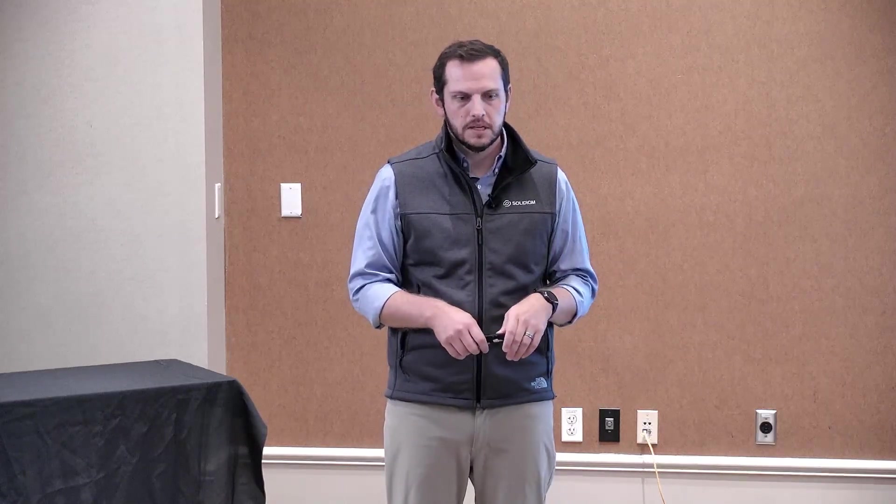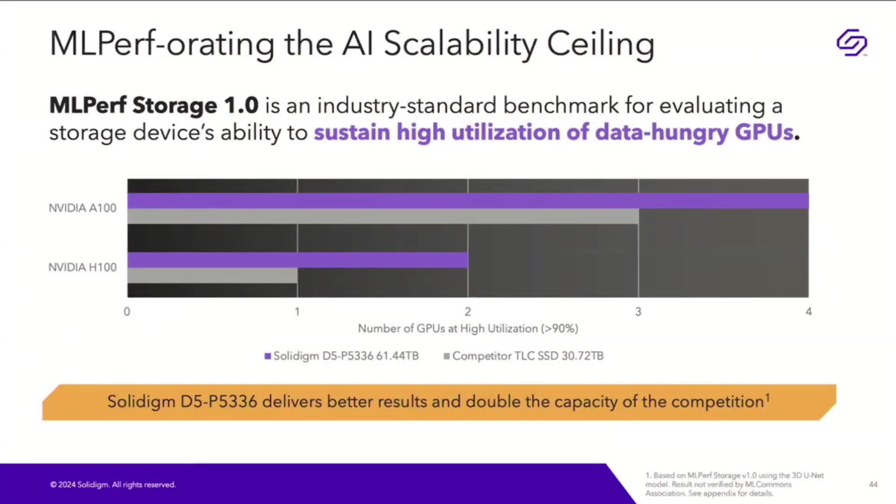At the training stage, looking at a single 60-terabyte QLC SSD, the test measures how many GPUs that storage device can keep fed with data so the GPUs are utilized at least 90% over the test duration. A result of one means your device kept one GPU well-fed. Results are shown for both A100 and H100. Our high-density QLC single device kept four NVIDIA A100 GPUs highly utilized, and two H100s utilized.